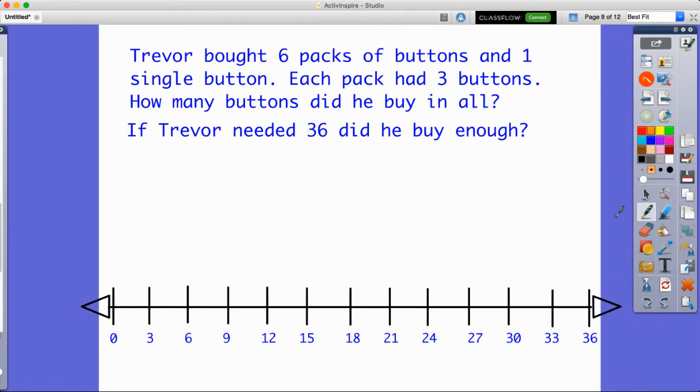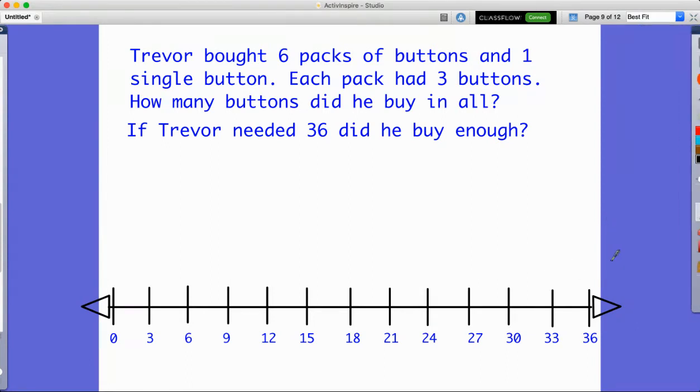Let's look at another word problem that we're going to use multiplication to solve. And for this one, we're going to look at a number line because you will probably encounter a number line in your lesson. This problem says Trevor bought six packs of buttons and one single button. Each pack has three buttons. How many buttons did he buy in all? And then we have another question. If Trevor needed 36, did he buy enough? There's a lot of information in this problem. So let's look at our number line here.